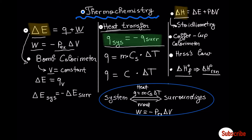You also have to keep in mind that Q of the system is always minus Q of the surrounding — they always have the opposite effect. Q itself can be measured by using specific heat capacity, mass of a matter, and the change in temperature. Specific heat capacity is the amount of heat required to raise the temperature of one gram of a substance by one degree Celsius.